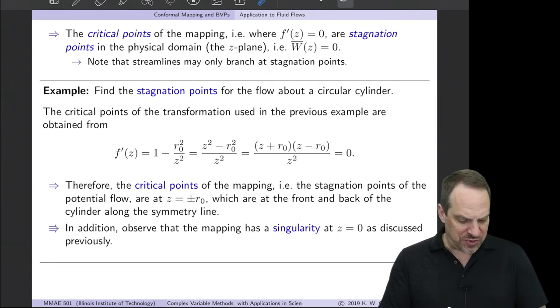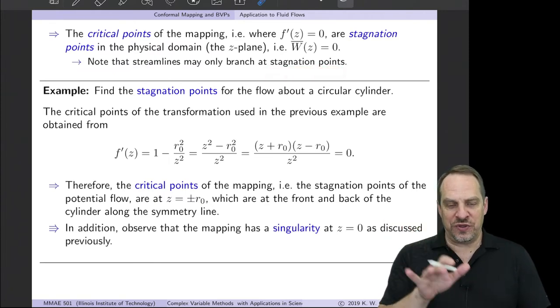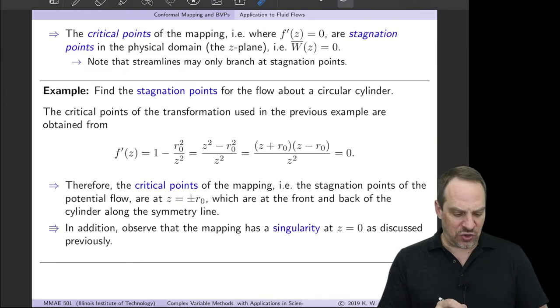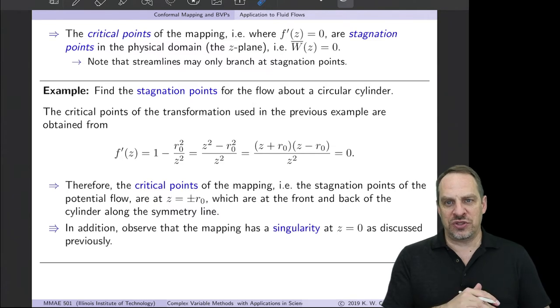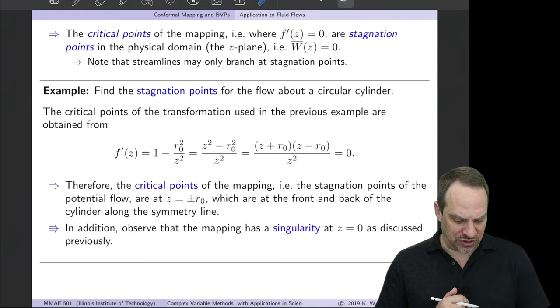Now for you fluid dynamics geeks, you'll remember that streamlines can only branch at stagnation points. So you can only have a streamline, a single streamline that branches off into two separate streamlines that can only occur at a stagnation point. Well, let's take this fact that we just learned, the relationship between critical points and stagnation points. Let's apply that to the circular cylinder.